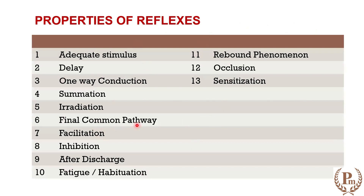I have enlisted around 13 properties of reflexes and we are going to go to each one of them. These properties may be very similar to what you have learned in synapses — like one-way conduction in chemical synapses, facilitation, occlusion, and fatigue. The 13 properties are: adequate stimulus, reflex delay, one-way conduction, summation, irradiation, final common pathway, facilitation, inhibition, after discharge, fatigue or habituation, rebound phenomena, occlusion, and sensitization.